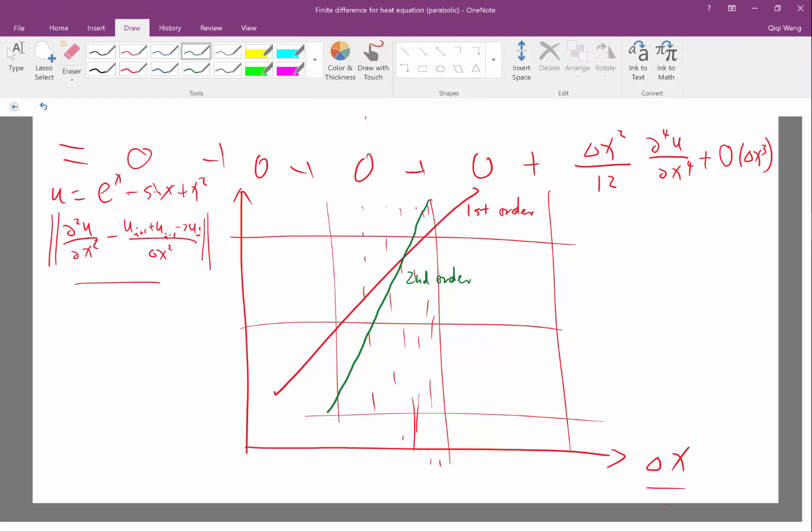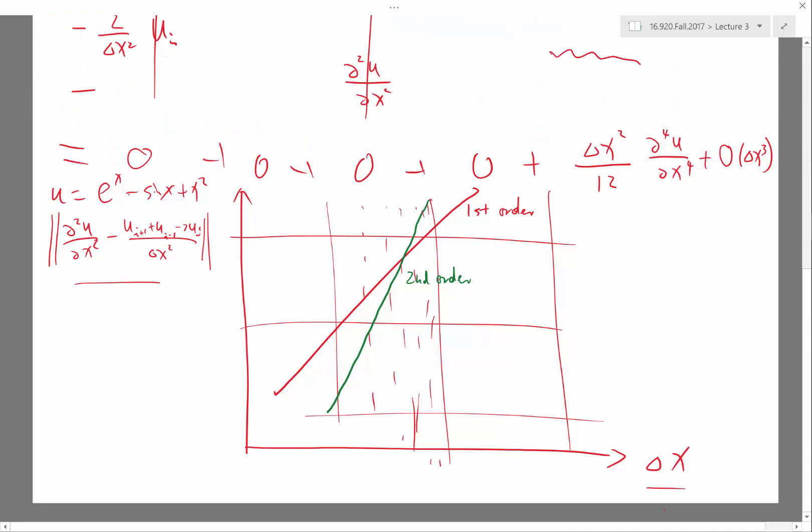Similarly, if you have a third-order scheme, you expect the line to be even steeper, et cetera. So this is a good way to check you actually have an accurate or whatever order scheme you think you have.